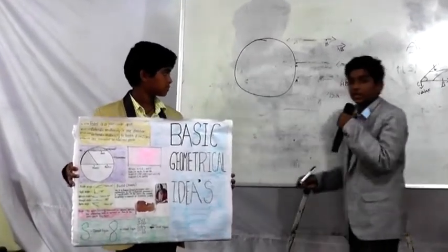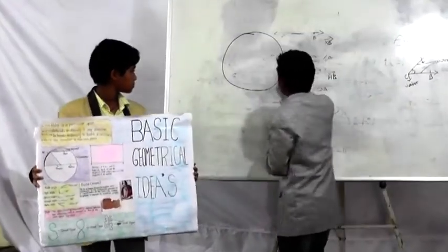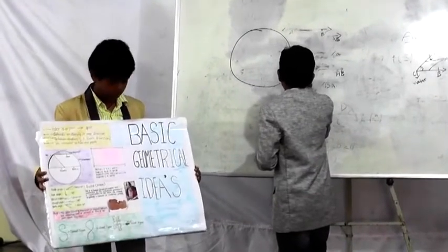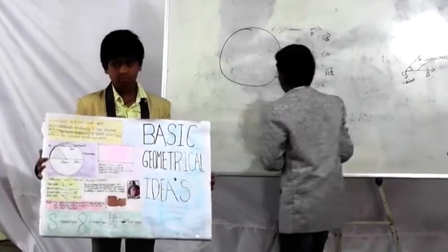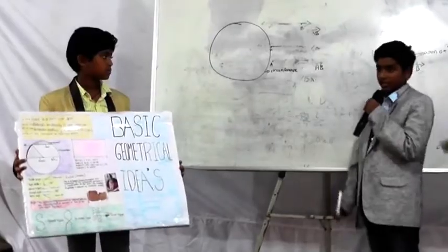The boundary of the circle is known as the circumference. The center of the circle is known as the center.